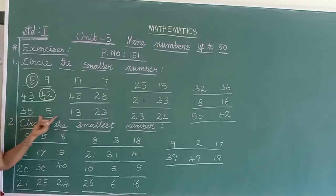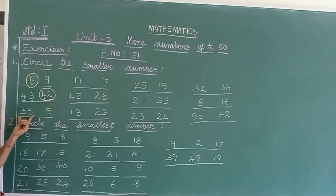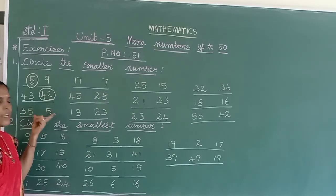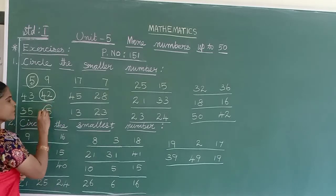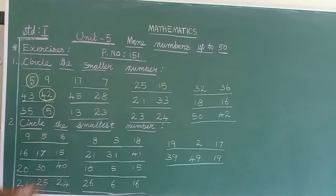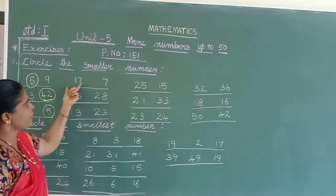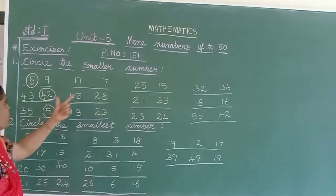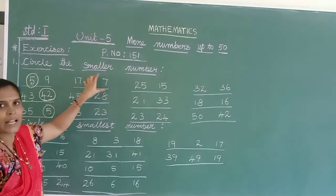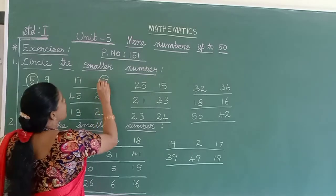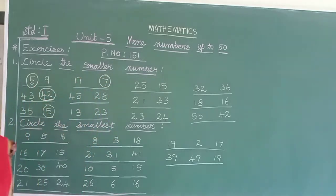The next sum: 35 and 5. Here one is a 1-digit number and the other is a 2-digit number. The rule is: always the 1-digit number is smaller than the 2-digit number. So circle 5. Come to the next one: 17 and 7 — apply the same rule. Single digit is always the smaller one compared to the 2-digit number.